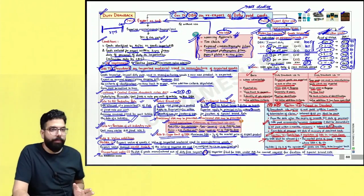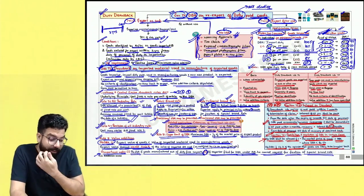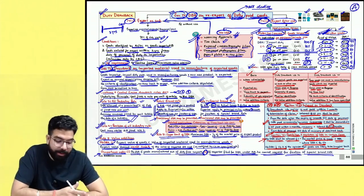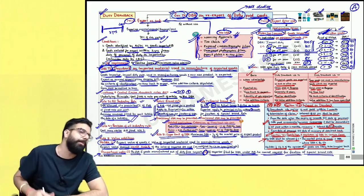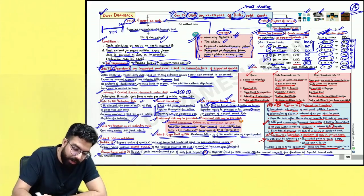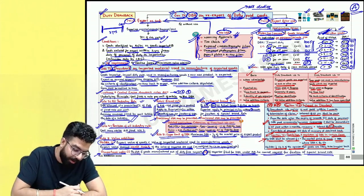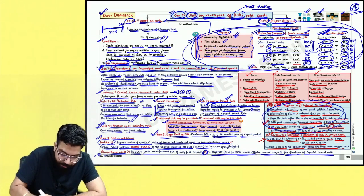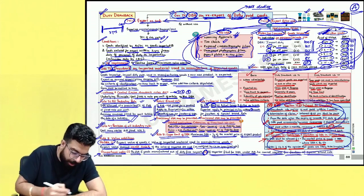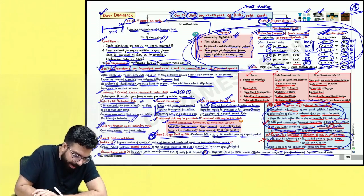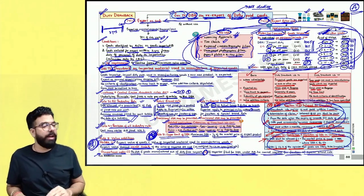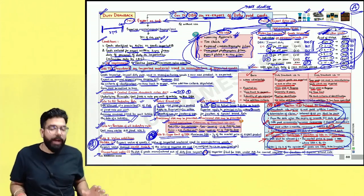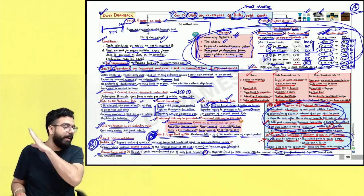From an exam point of view, this is an A-graded chapter for the November exam. For May 2024 students, this chapter has been excluded. A small question of three marks can come from this chapter. Section 75, section 76, rule 8, and rule 9 are particularly important. Please solve some questions before the exam.